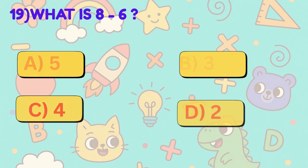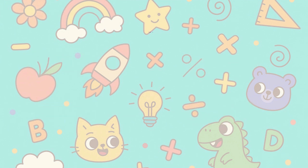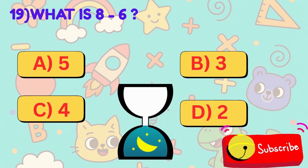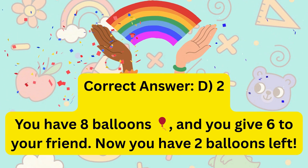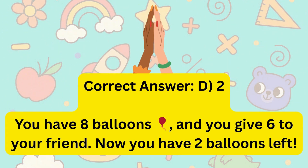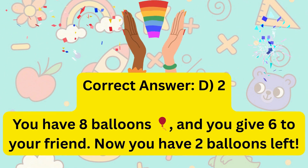19. What is 8 minus 6? Is it A, 5, B, 3, C, 4, or D, 2? Correct answer is D, 2. You have 8 balloons and you give 6 to your friend. Now you have 2 balloons left.